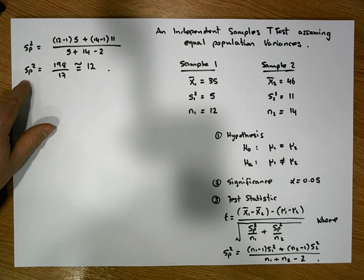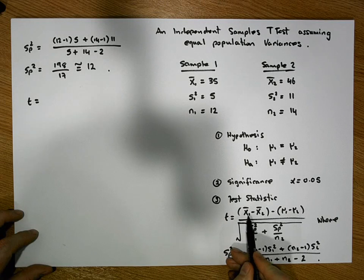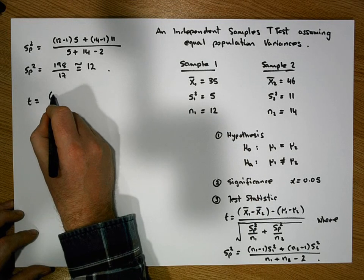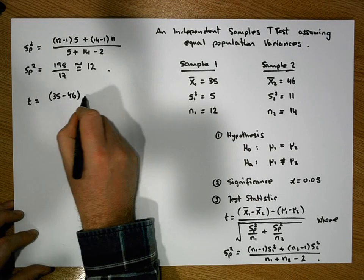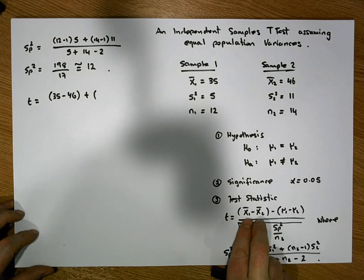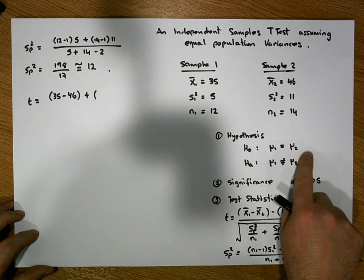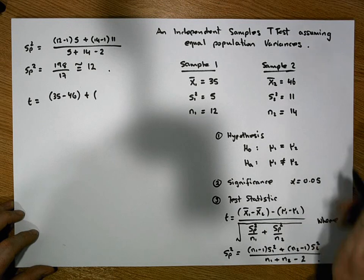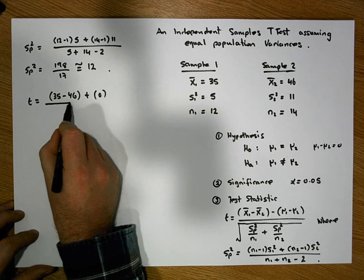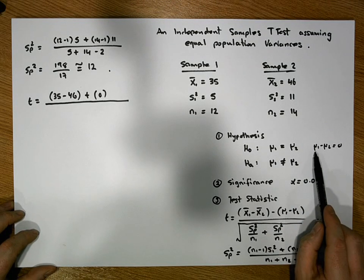Now that we've calculated the pooled variance, we can calculate the test statistic. t equals x1-bar minus x2-bar, so it's 25 minus 46, minus mu1 minus mu2. The test statistic tells us the distance between the evidence and our hypothesized null position. Under the null hypothesis, mu1 equals mu2, so mu1 minus mu2 equals zero — it has no effect here. It doesn't have to be zero; for a more advanced hypothesis, we could hypothesize a specific difference between the two population means.